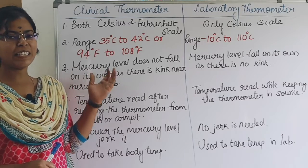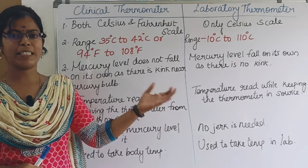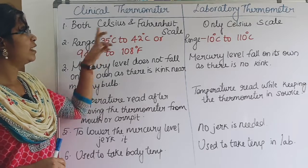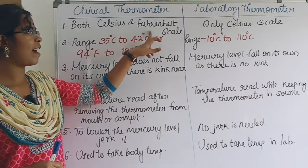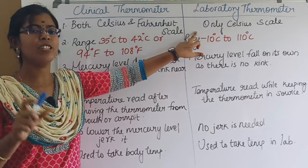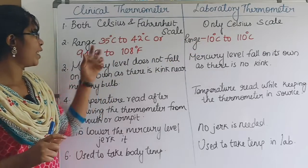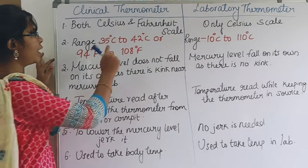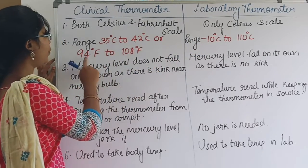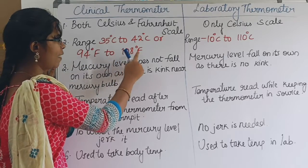Let's see the difference between a Clinical Thermometer and a Laboratory Thermometer. In the clinical thermometer, there are Celsius and Fahrenheit scales. The Celsius scale ranges from 35 degrees centigrade to 42 degrees centigrade, which is equal to 94 degrees Fahrenheit to 118 degrees Fahrenheit.